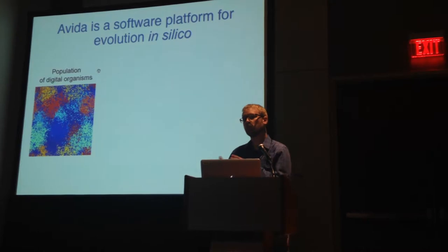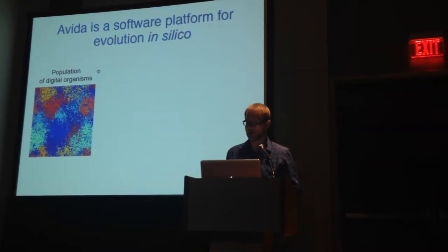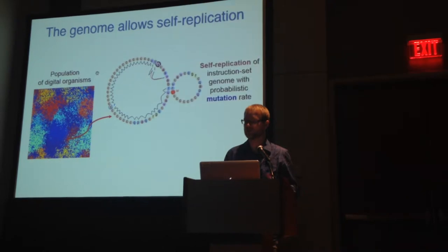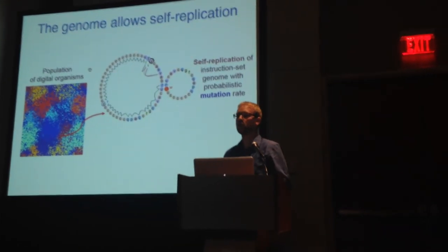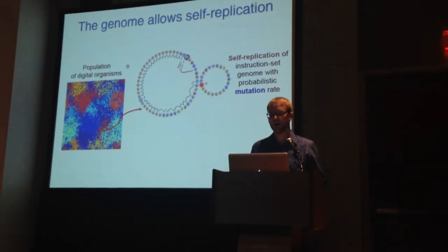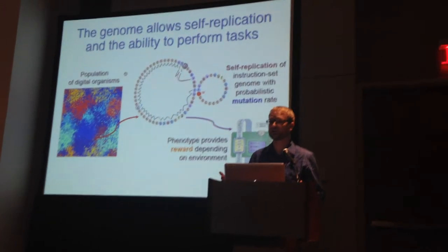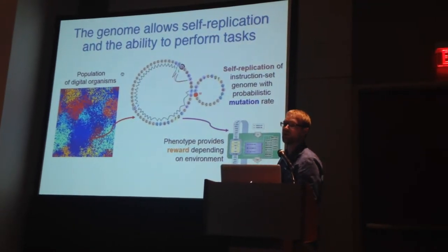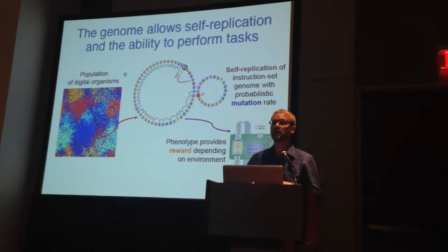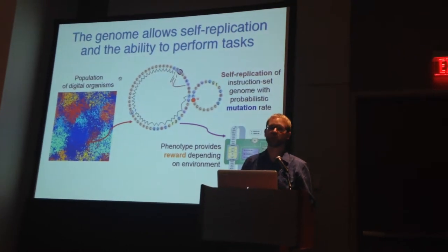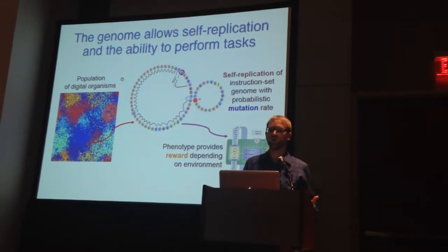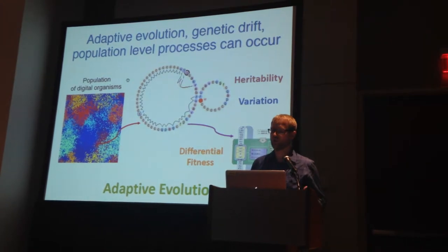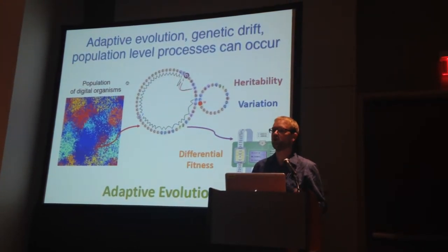We propose to do this with digital evolution via the AVIDA software platform. What is AVIDA? It's evolution in a computer. We have these digital organisms evolving in a digital landscape. A digital organism is a small computer program composed of a sequence of computational instructions — that's its genome. The genome allows it to self-replicate, and when it does so, mutations can be introduced probabilistically according to mutation rate. The genome also allows it the ability to perform different computational tasks. We input a number from the environment, do some computation on it, and output a number. If those numbers match in a way that we a priori set the environment to reward, that organism gets a boost and can replicate quicker. So we have heritability, variation, and differential fitness — all the ingredients of natural selection, adaptive evolution, and genetic drift. All other population-level processes are inherent to the system.